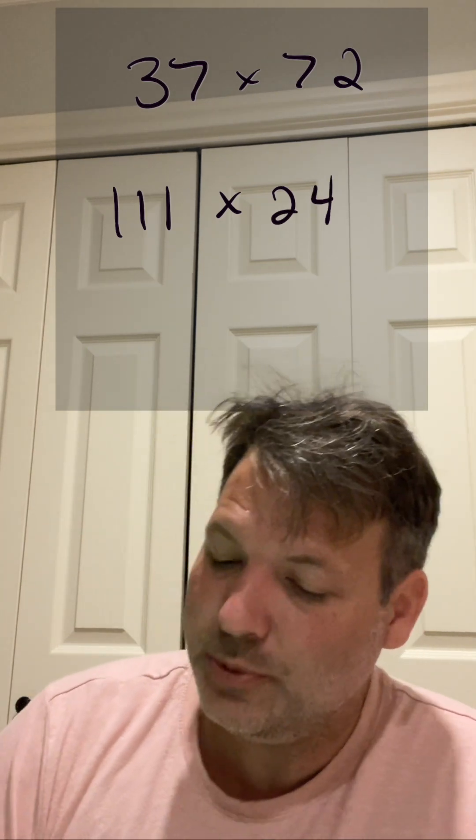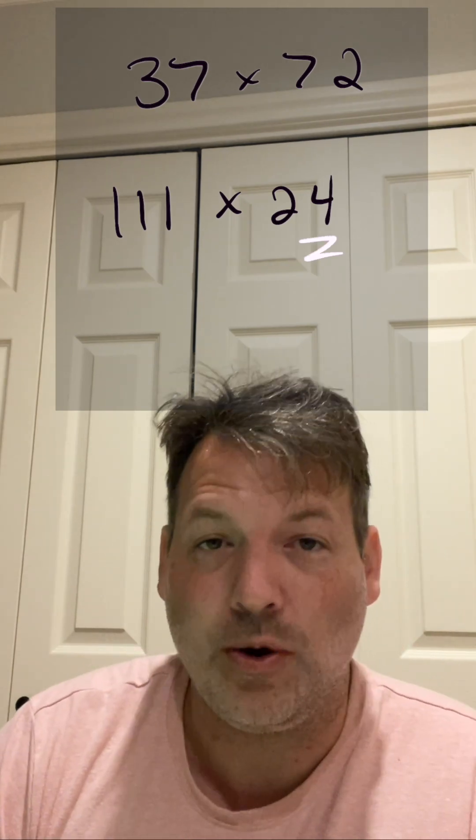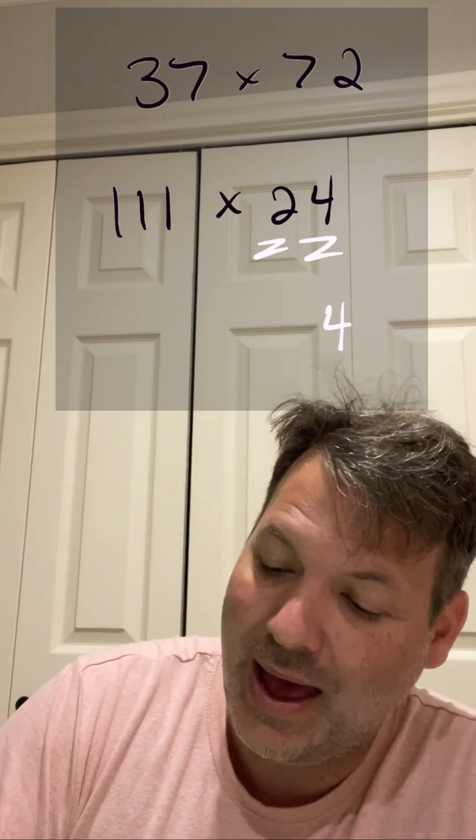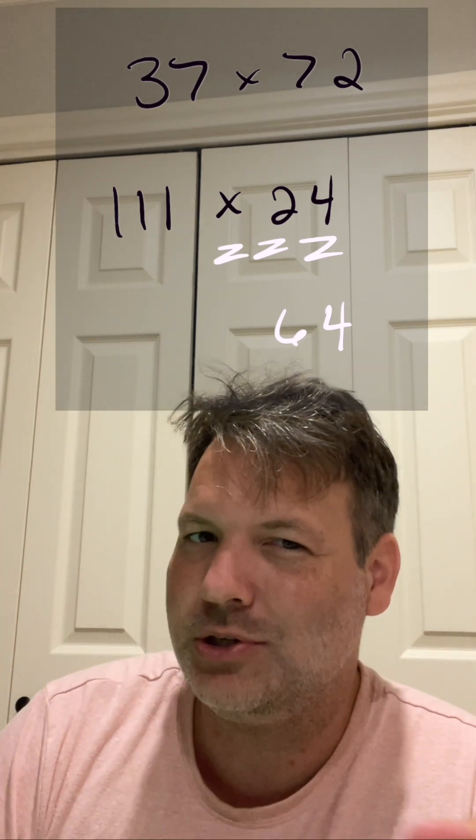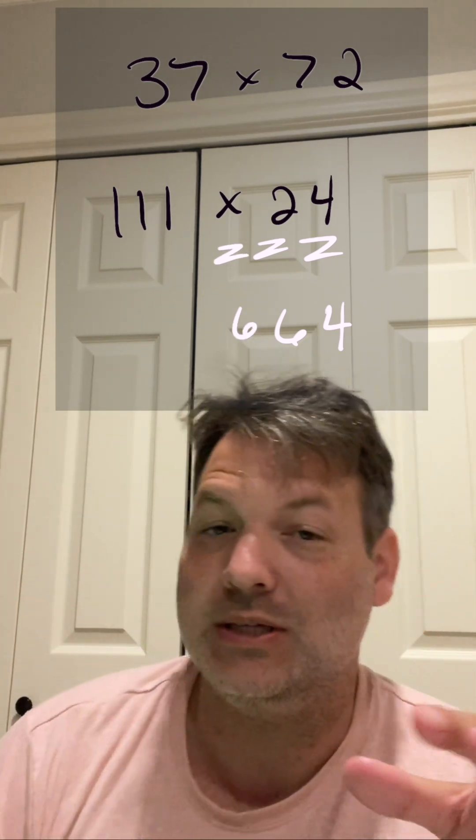And multiplying by 111 is super easy. There's this fun trick. We take our ones digit and we rewrite that. We add the ones and the tens digit, six. We do it again, kind of imagining that there's a hundreds digit, even though there's not.